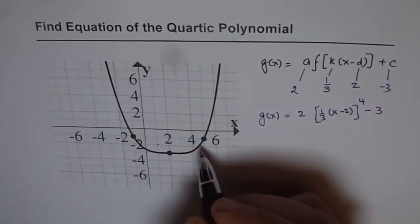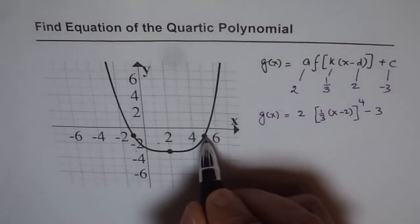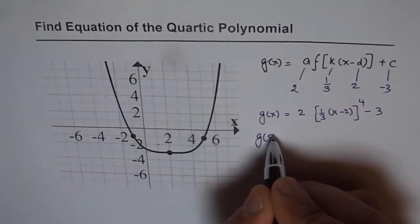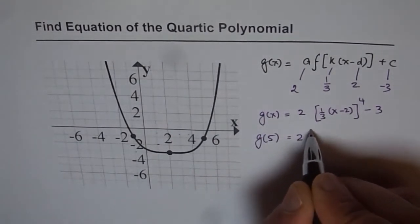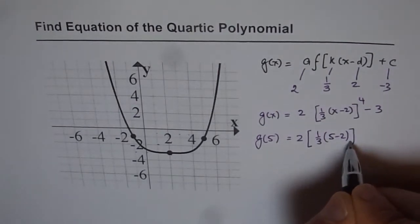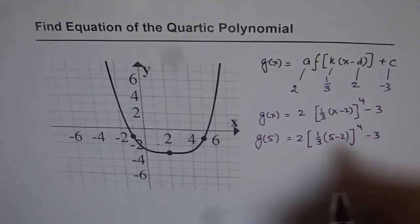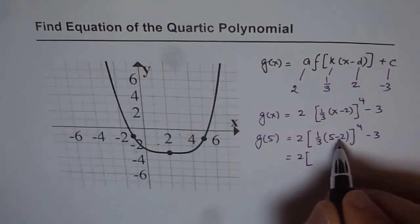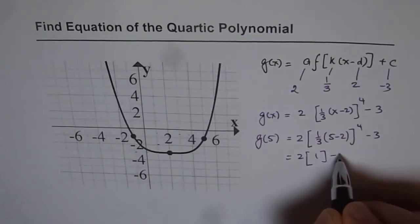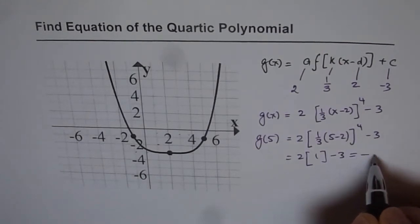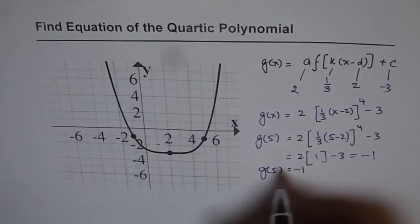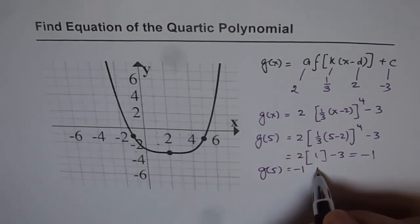It is a good idea to test few points. We can test this point which is at 1, 2, 3, 4, 5. Let us find what is g of 5. g of 5 should be 2 according to our equation. 5 minus 2 to the power of 4 minus 3, that gives us 2. 5 minus 2 is 3. 3 divided by 3 is 1. 1 to the power of 4 is 1. Minus 3, that gives us a value of minus 1. We know g of 5 equals to minus 1 from the graph also. That it verifies.